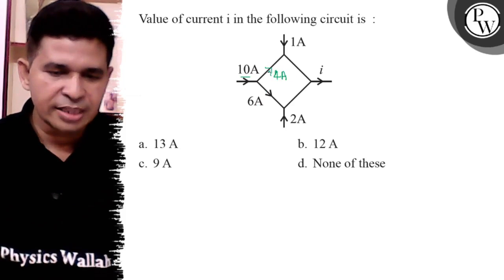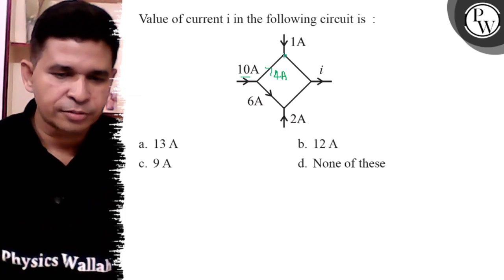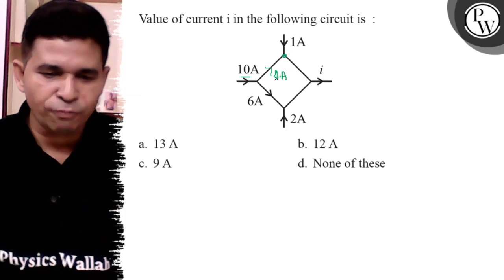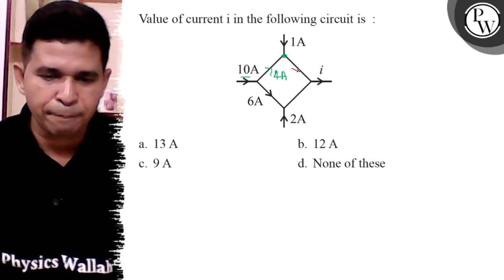At that junction, 4 ampere is coming from that side and 1 ampere is coming from that side. So how much is going in the next branch? 5 ampere.